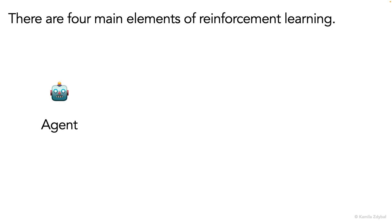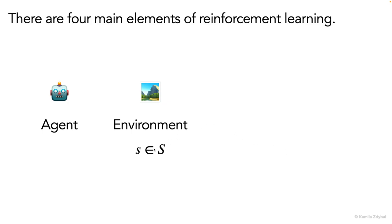So we have a learning agent. You can think of it as a robot capable of navigating or interacting with some environment. Then we have the environment itself, where any state within that environment that the agent can be in is denoted as s.